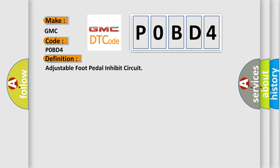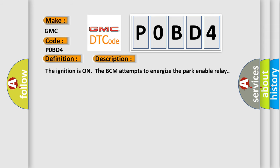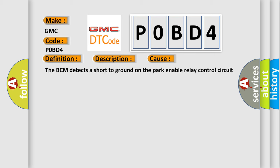And now this is a short description of this DTC code. The ignition is on, the BCM attempts to energize the park enable relay control circuit while attempting to activate the output.